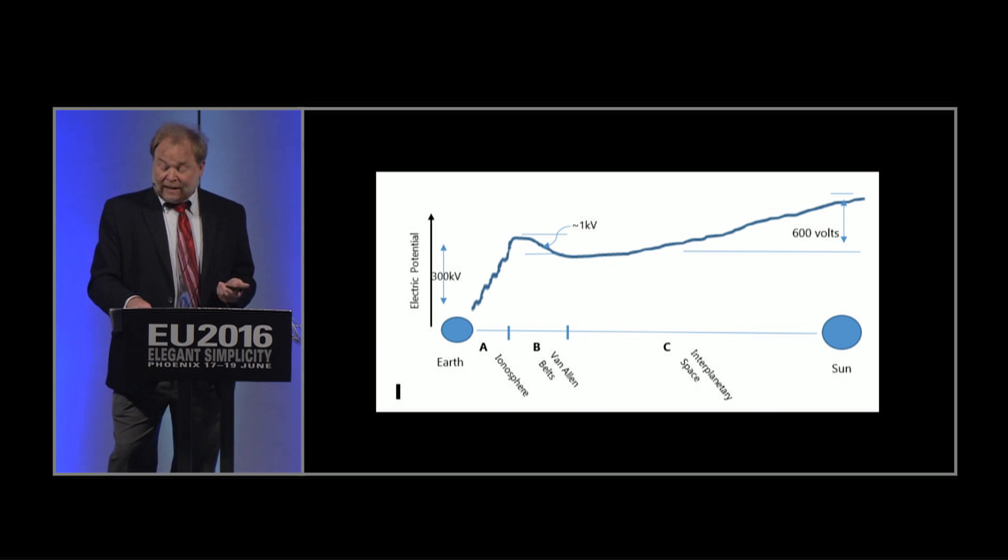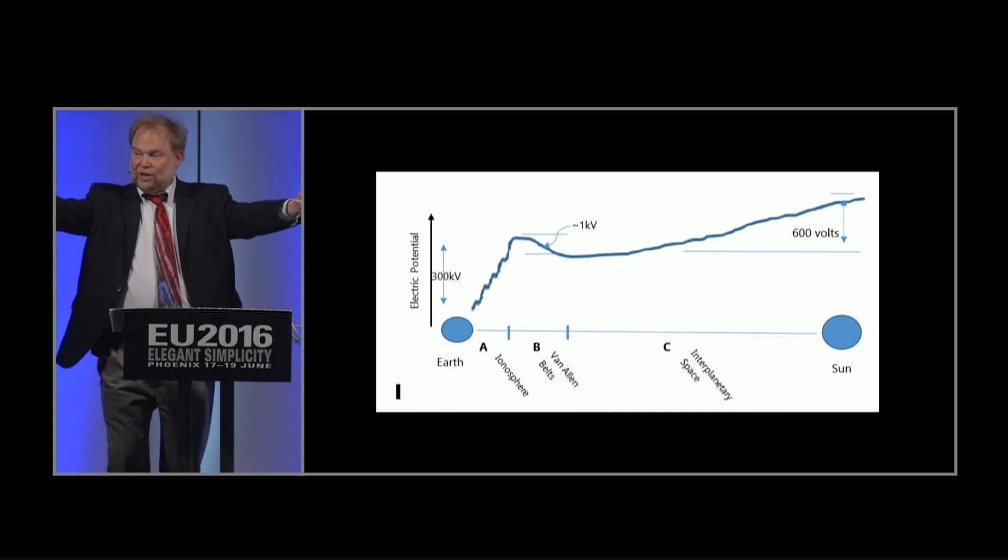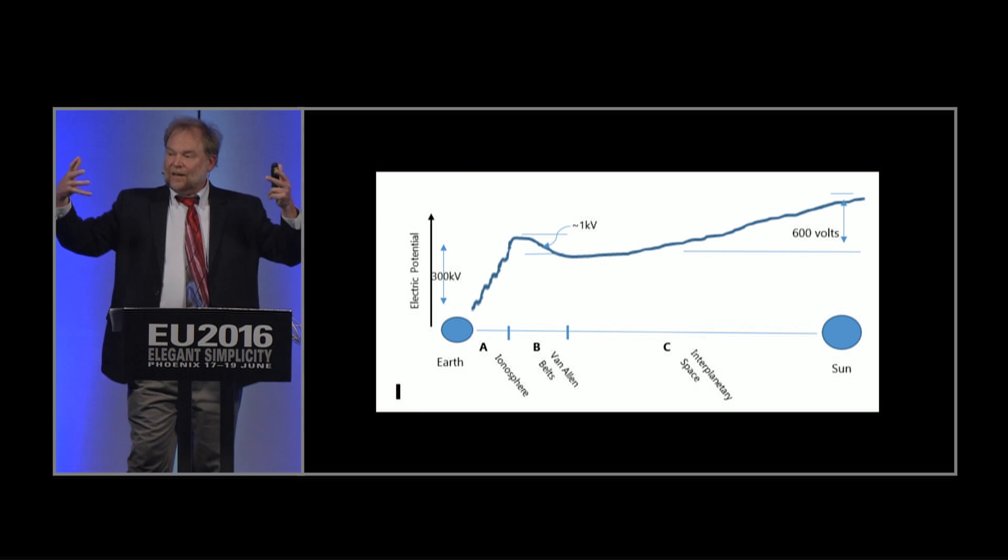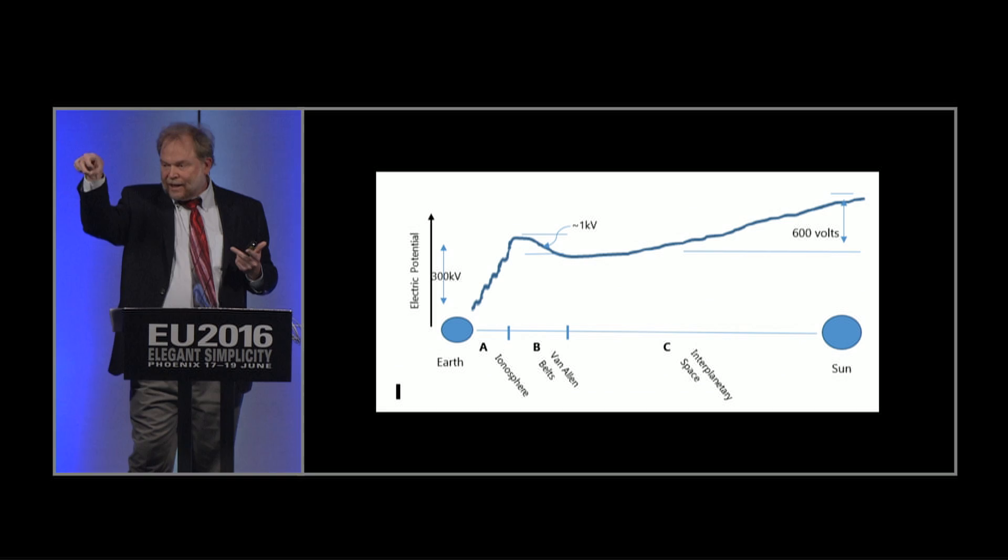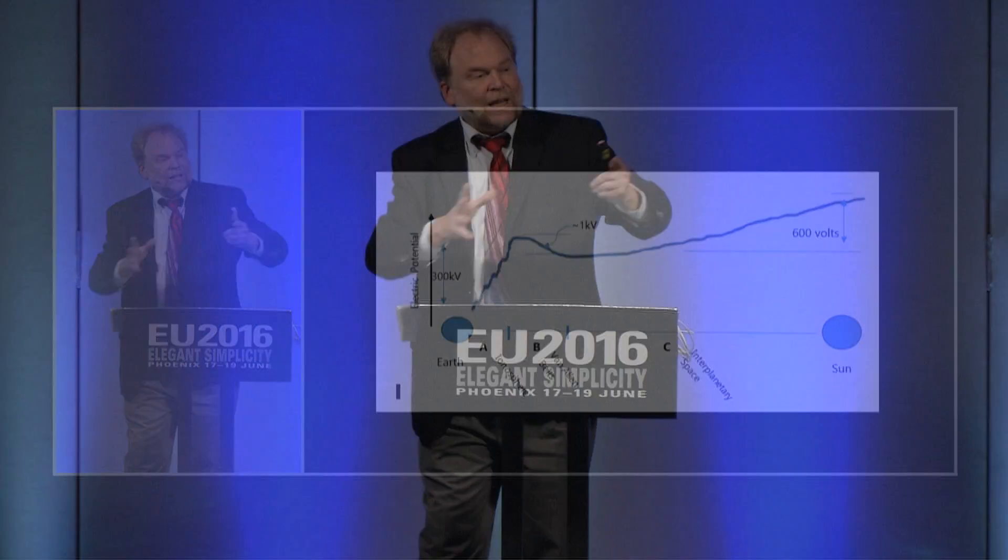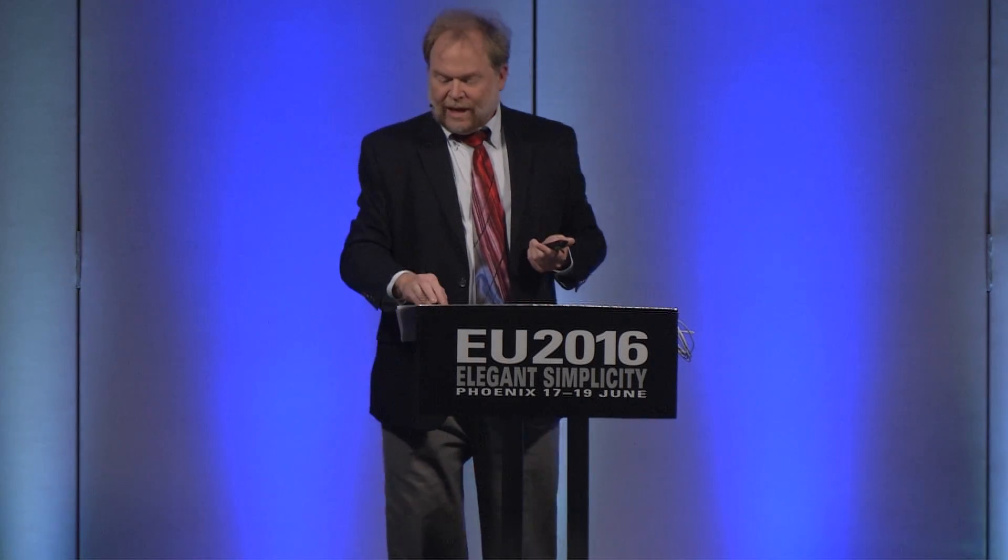And analyzing their data, they found that there is a continuous stream of double layers, electric double layers, coming from the Sun outward in all directions. Well, the satellite's only here, streaming past the satellite, traveling double layers.